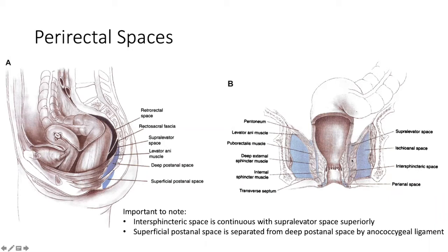The intersphincteric space does communicate superiorly with the supralevator space — not a connection I would go making at the time of addressing a perirectal abscess, but one that can exist if you're thinking you have inadequate source control. The deep post-anal space is separated from the superficial post-anal space by an important landmark called the anococcygeal ligament. That will come up a lot if you're ever addressing a horseshoe abscess — it has to be divided to get into that space. You might hear us talk about it in conference: if you're making a posterior incision to get into the deep post-anal space, you have to divide the anococcygeal ligament, otherwise you won't drain the abscess adequately.